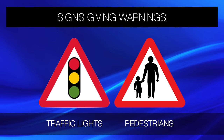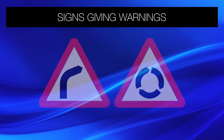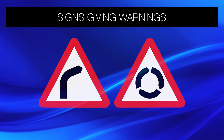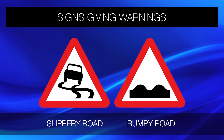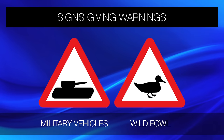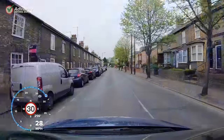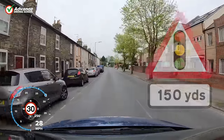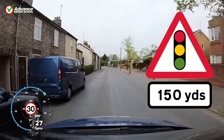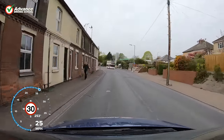Triangular signs give warnings and are there to help us prepare for a hazard on the road ahead that we might not be able to see in time. They might warn us of a sharp bend, roundabout, or even a slippery or bumpy road. The sign will make it clear what the hazard is and we must decide what to do about it — we would normally slow down and be ready to react if needed. In this case the small sign on the left warns us that there are traffic lights ahead, so we can get ready to choose a lane and stop if needed.